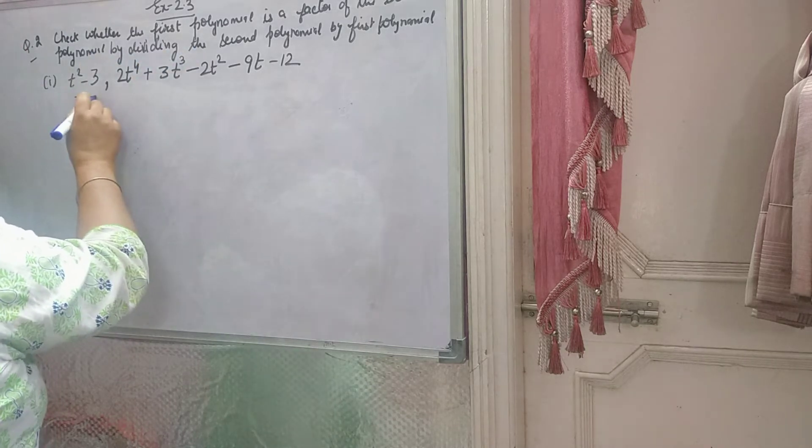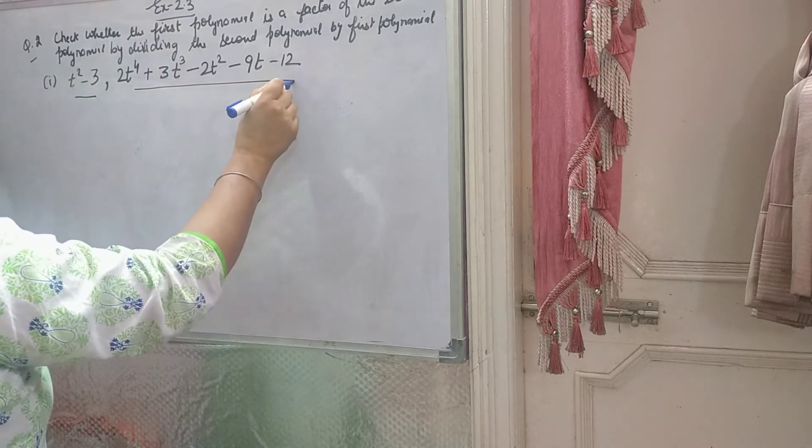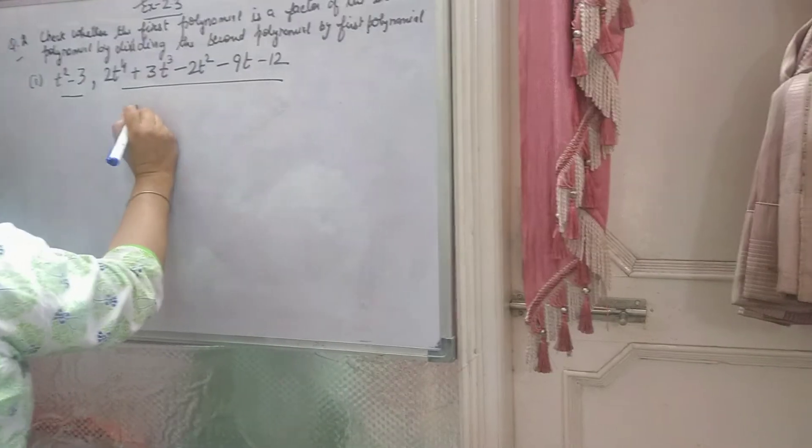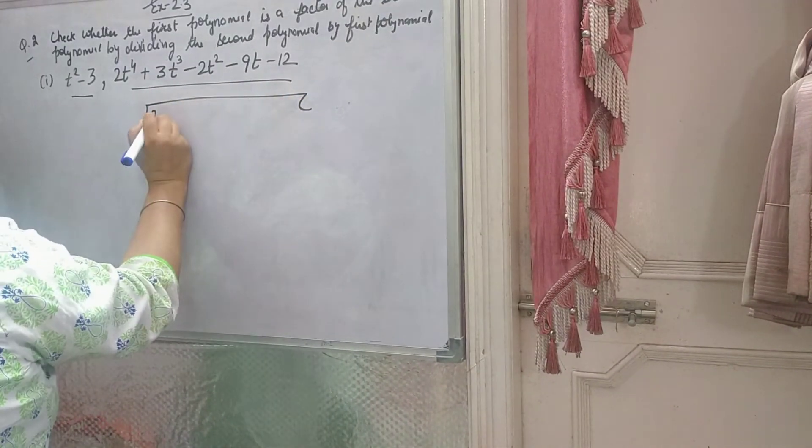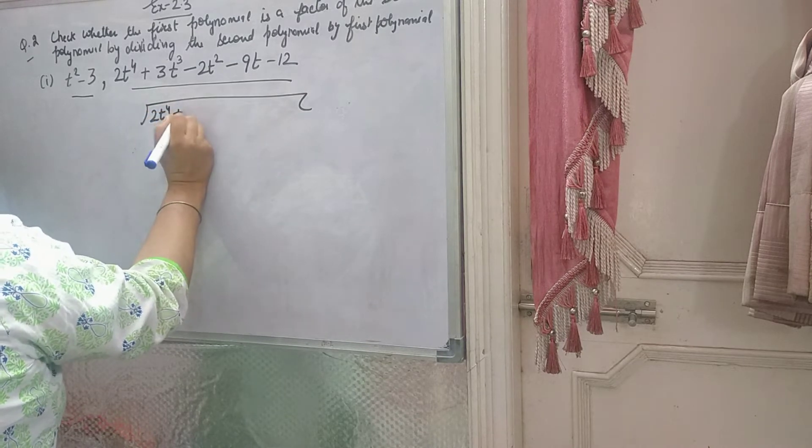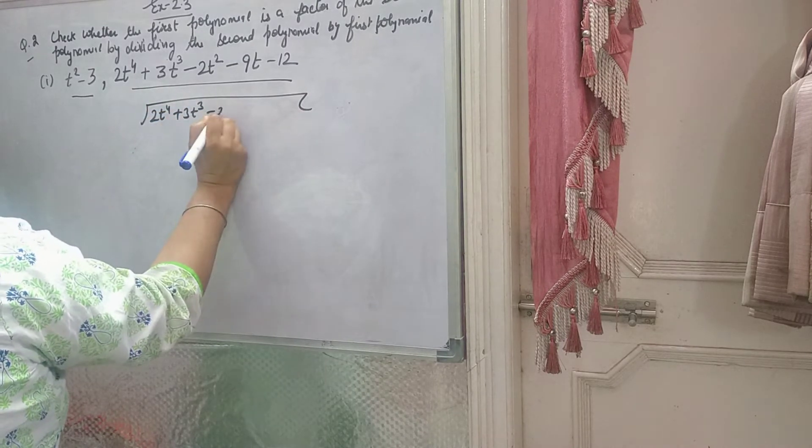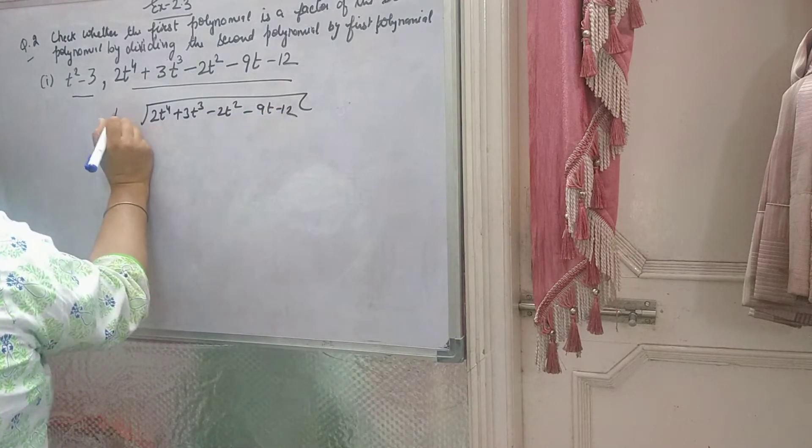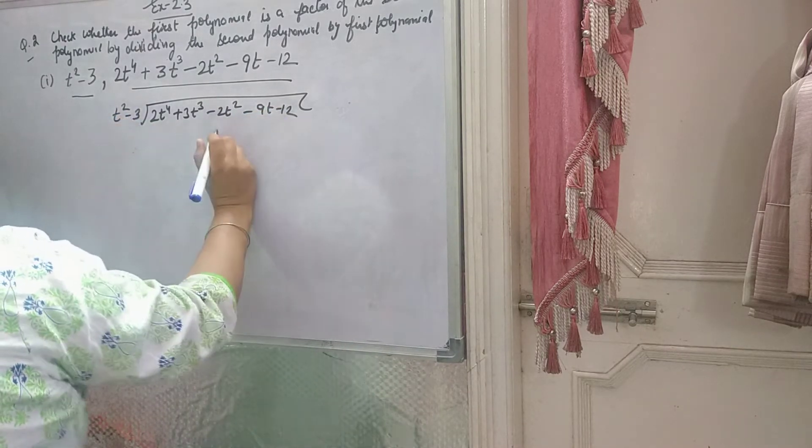Check whether the first polynomial is a factor of second polynomial by dividing the second polynomial by first polynomial. Firstly, you will divide the second polynomial by the first polynomial and if the remainder will come 0, then you will say it is a factor, otherwise not.